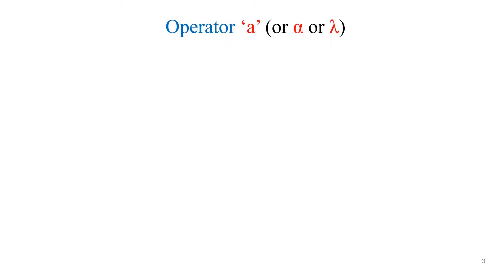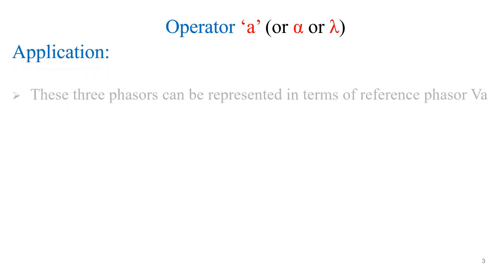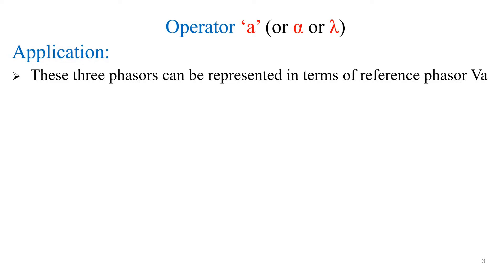Operator A — this can also be represented by alpha or lambda. Different textbooks will follow different notations for operator A. It is used to represent the three phasors with respect to a reference phasor.